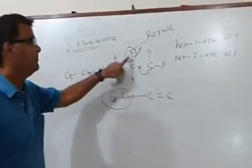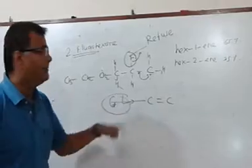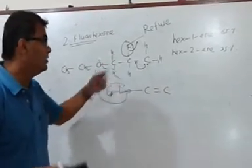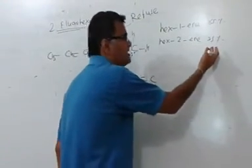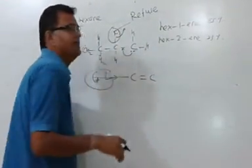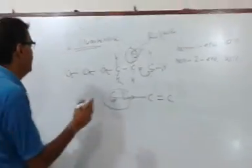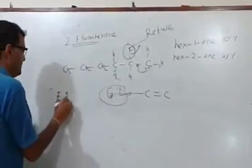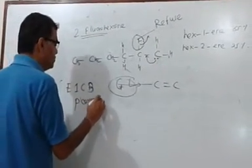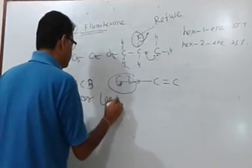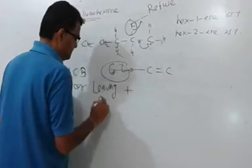Had this been chlorine, bromine or iodine the situation would have been exactly different. The mechanism would have been E2 and the yields also will be different. Hex-2-ene would have been around 75%. Hex-1-ene would have been around 30%. So please understand that E1CB mechanism will happen under two circumstances. Number 1, the leaving group is poor and it is accompanied by a base.